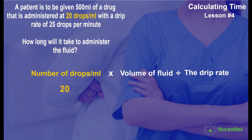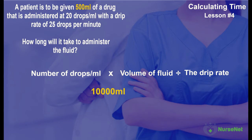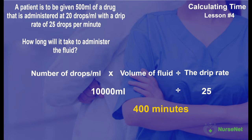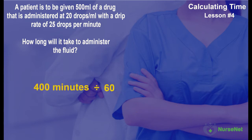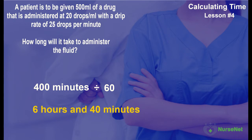We have drops per milliliter at 20, multiplied by the volume of the drug which is 500 milliliters, giving us a total of 10,000. 10,000 divided by the drip rate of 25 gives us a time of 400 minutes. Converting this into hours and minutes, 400 divided by 60 is equal to 6 hours and 40 minutes.